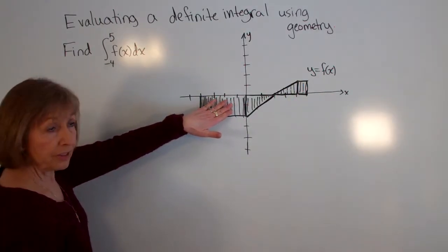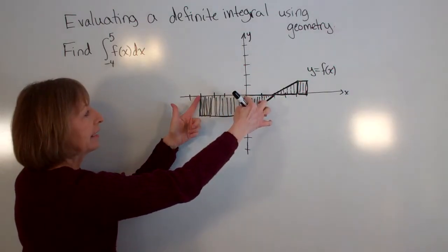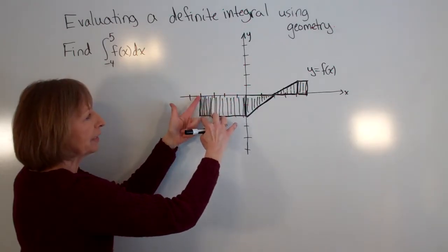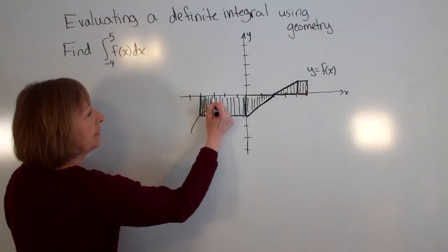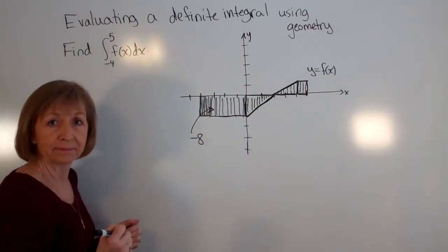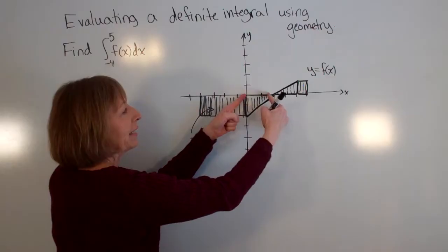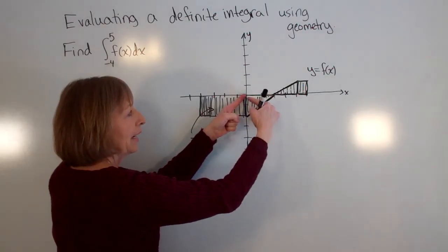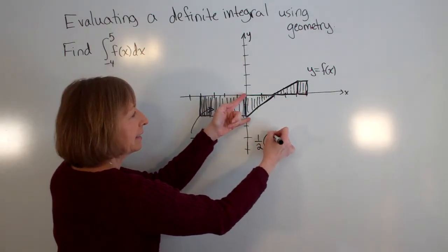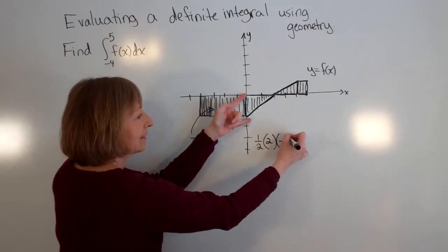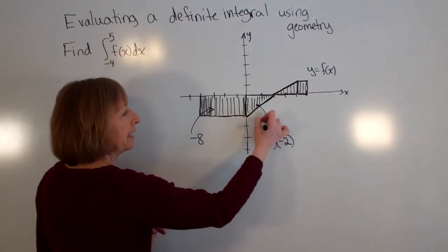For this first part — the rectangle — I have a length of 4 and outputs of negative 2, so this part gives negative 8. Then for this triangle, I have a base of length 2 and a height of negative 2, so one-half times the base times the height gives a value of negative 2 for that triangle.